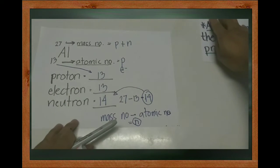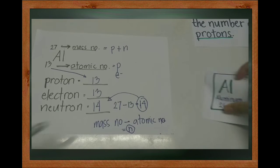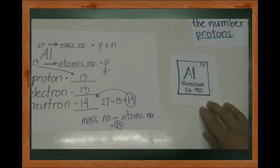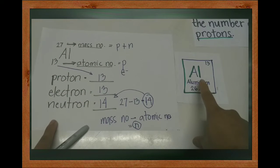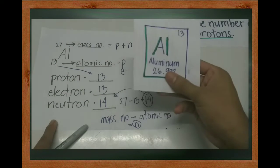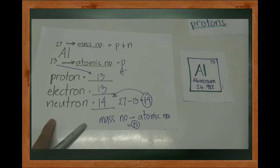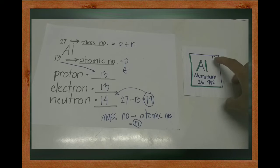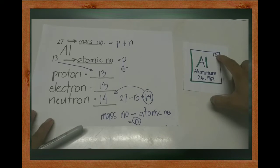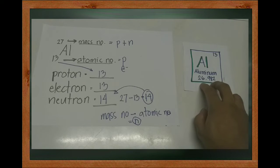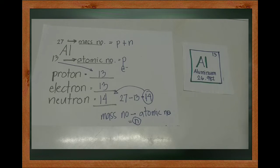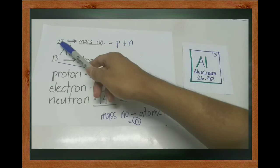Don't be confused. In the periodic table, you will see the format like this — two formats. The atomic number 13 is placed at the top, and 26.982 is the mass number, which when rounded to a whole number gives us 27.